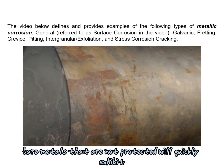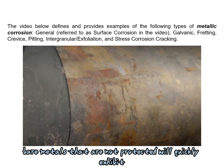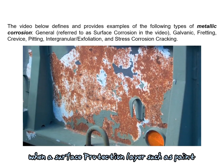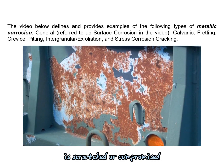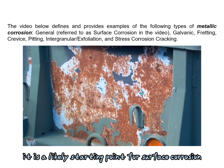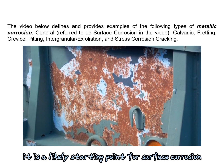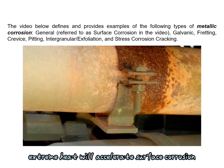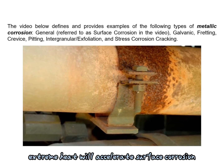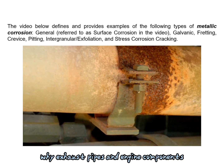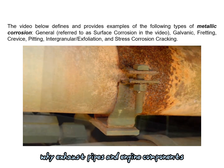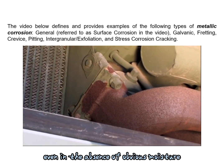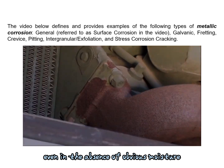Bare metals that are not protected will quickly exhibit surface corrosion. When a surface protection layer such as paint is scratched or compromised, it is a likely starting point for surface corrosion. Extreme heat will accelerate surface corrosion, which is why exhaust pipes and engine components commonly exhibit surface corrosion even in the absence of obvious moisture.